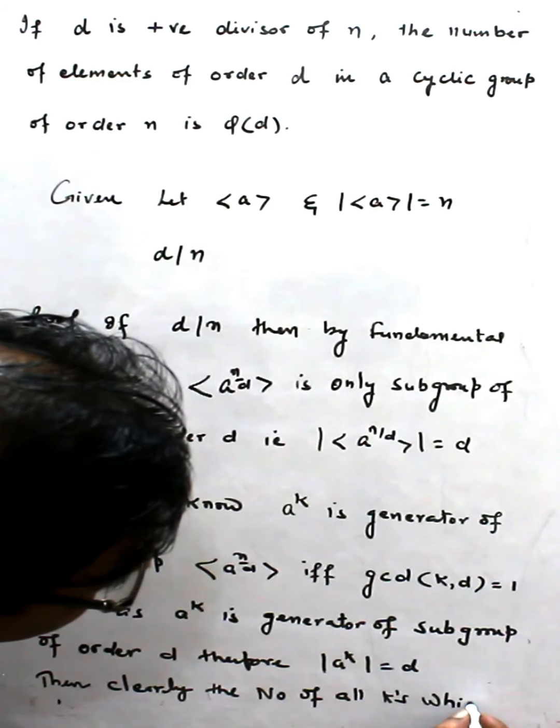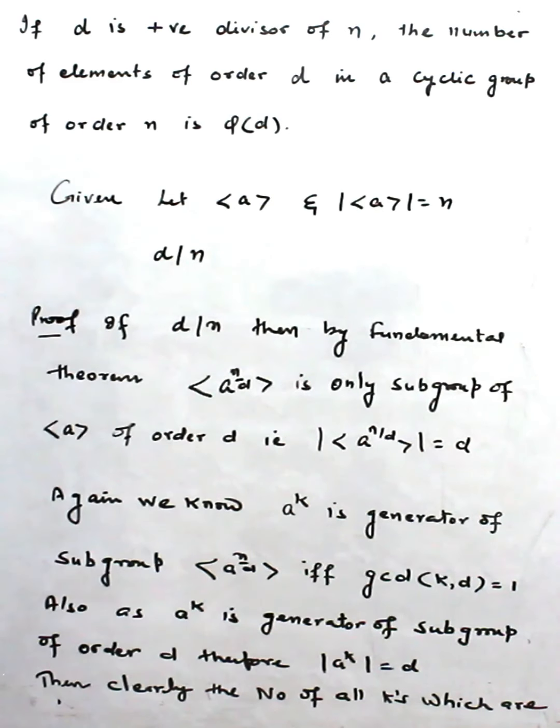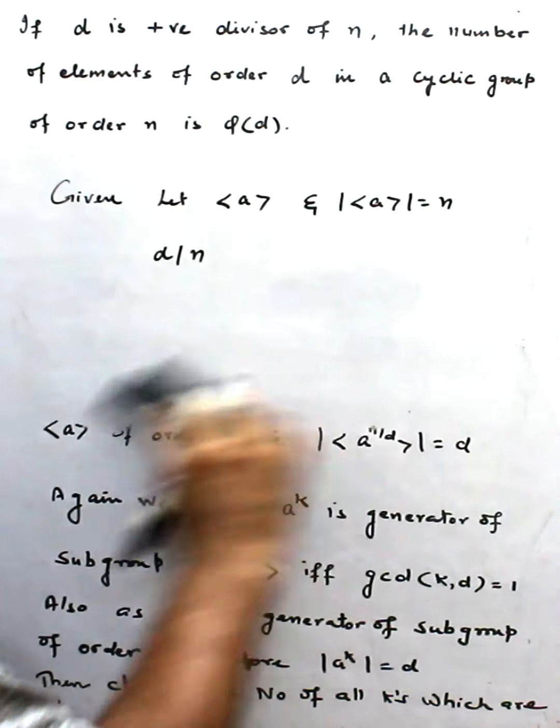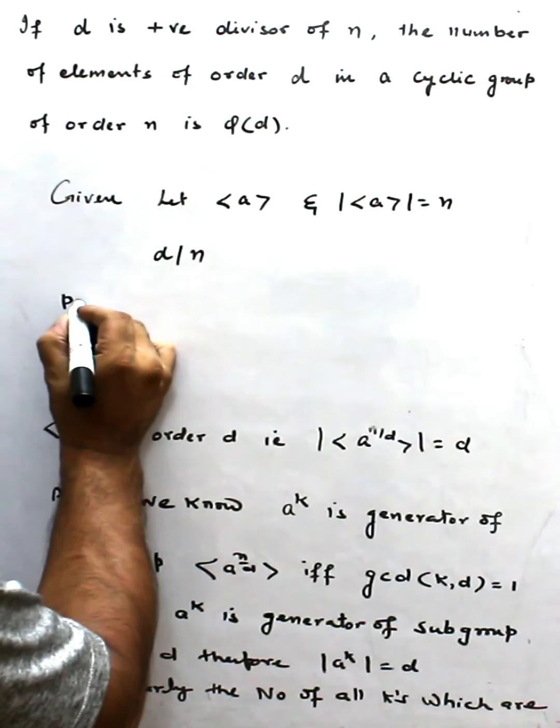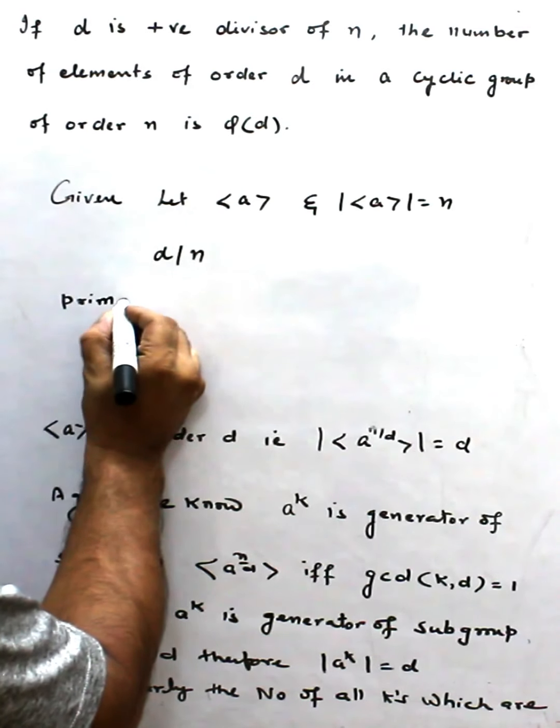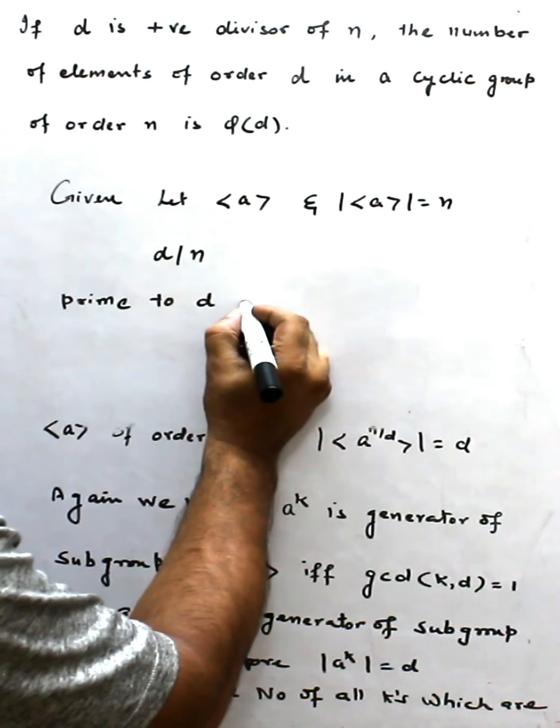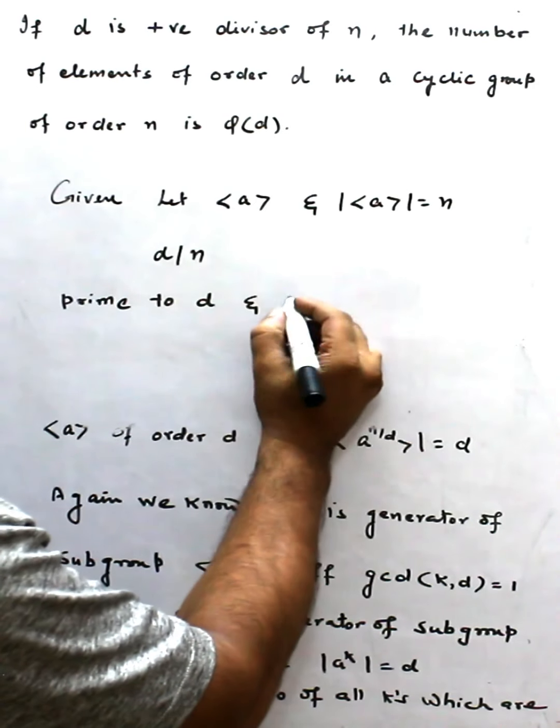The number of all k's which are prime to d and less than d...